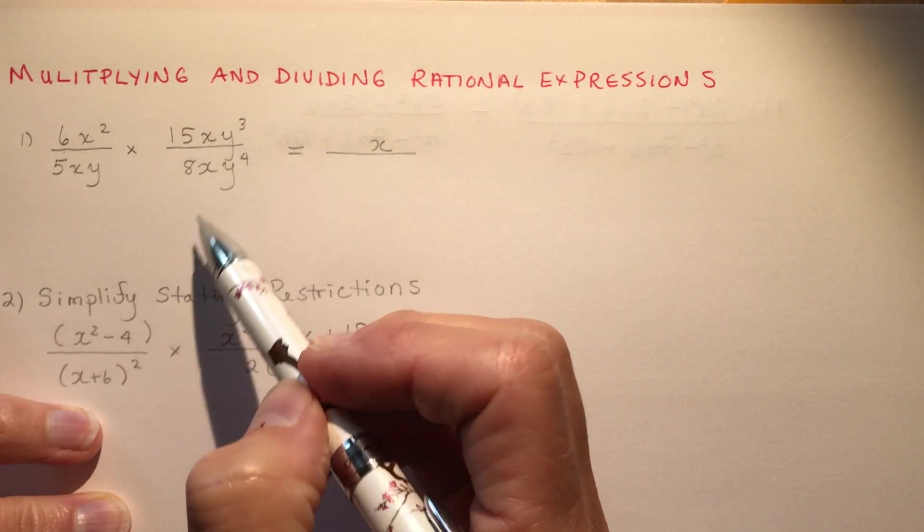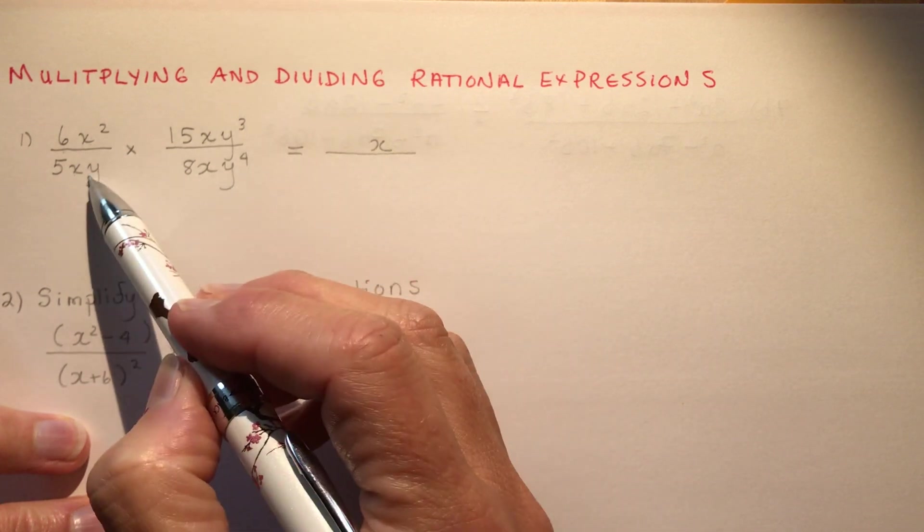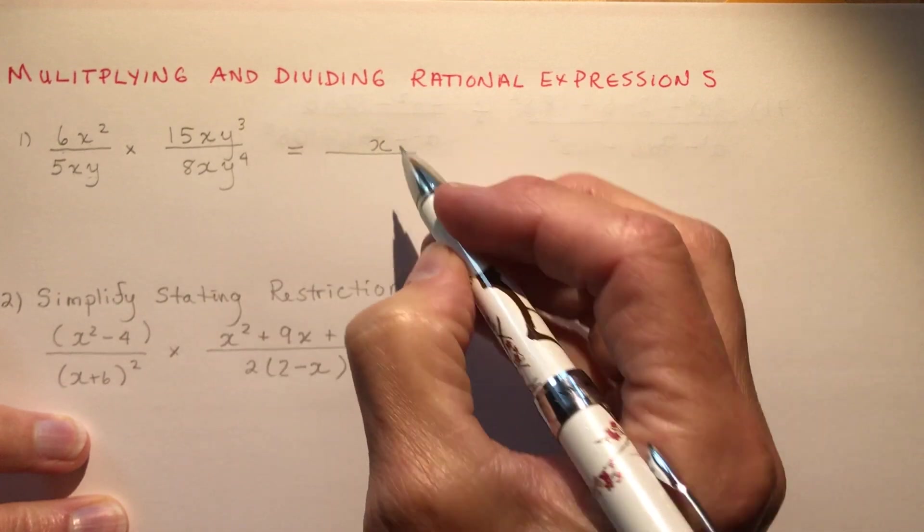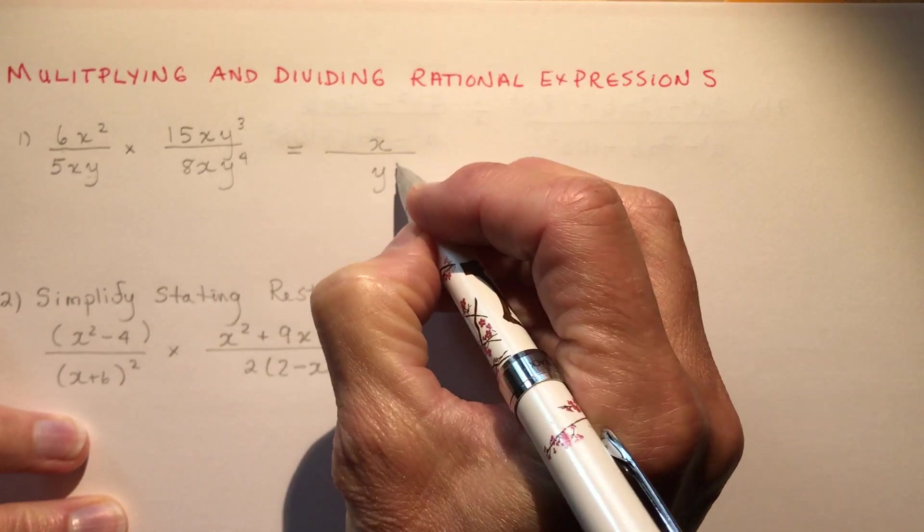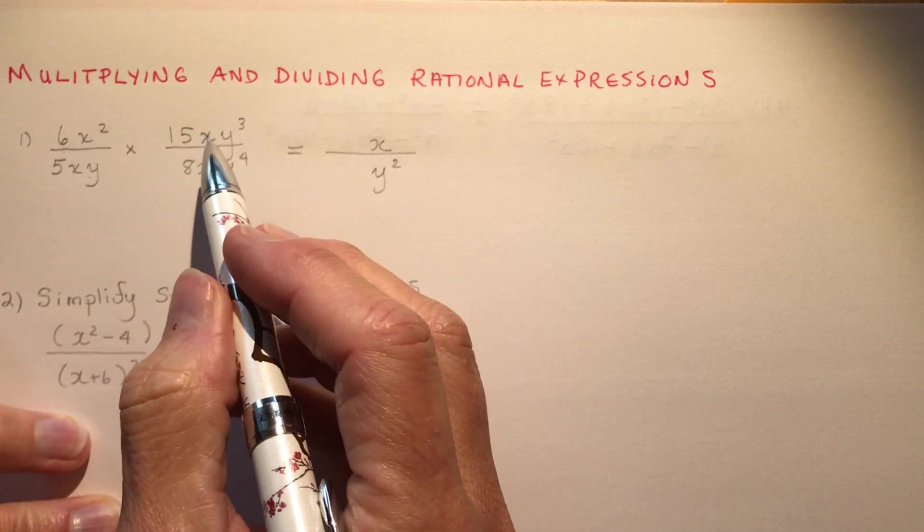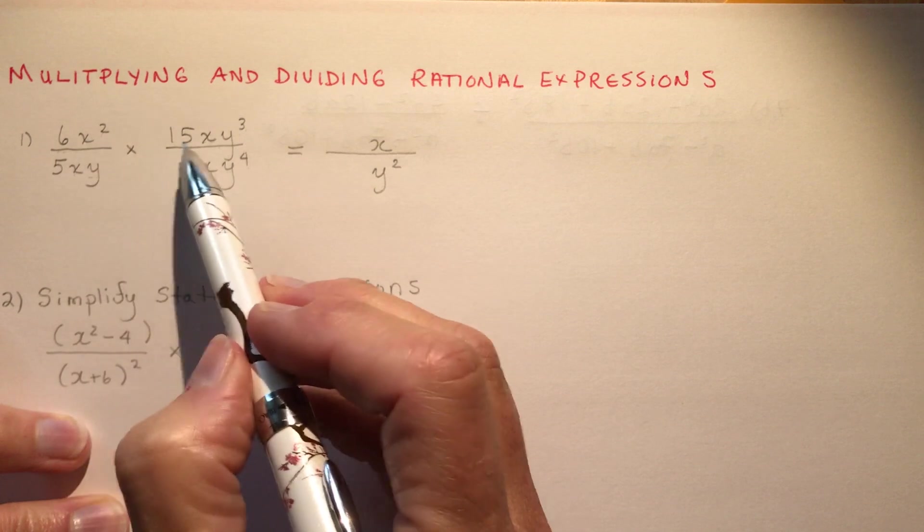Now I can do the same thing with the y's. I have 3 in the top here, and I would have 5 in the bottom if I expanded this. So 3 in the top, 5 in the bottom, that would leave me with 2 on the bottom. So now I've cleaned up all the variables here, that simply.